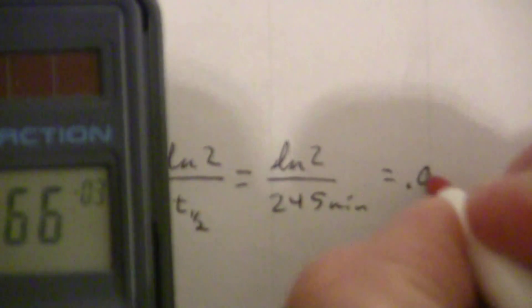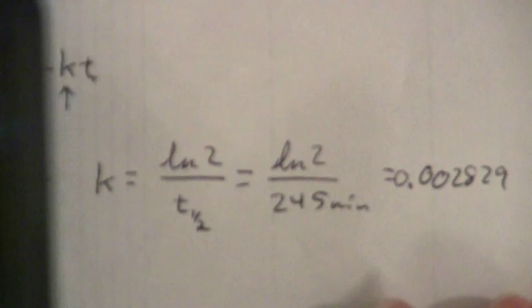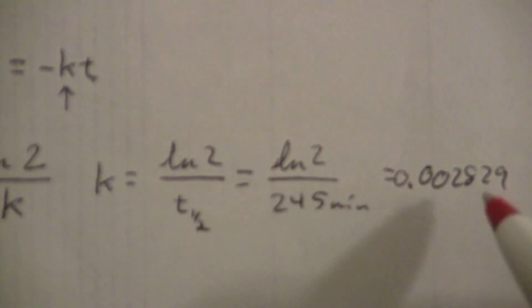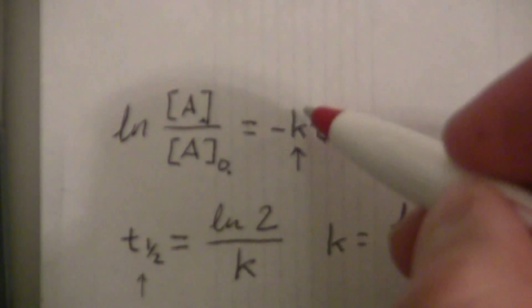And that will give me 0.002829, I'll leave it like that, so that is my rate constant, and I'll put that here.